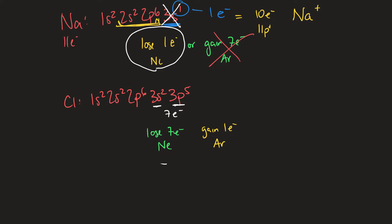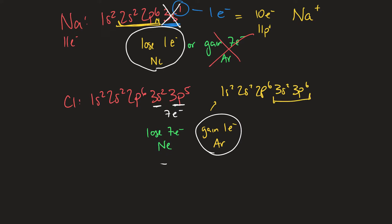The question is which one is easier — losing 7 or gaining 1? For chlorine, it's much easier just to gain one more. If it gains one, the electron configuration of the ion becomes 1s2, 2s2, 2p6, 3s2, 3p6. Now it has 8 valence electrons. Chlorine typically has 17 protons, but now has 18 electrons because it gained one more, which is why we write the chloride ion as Cl minus-one.